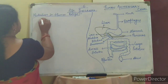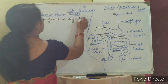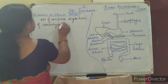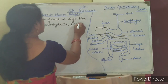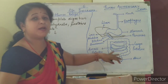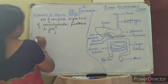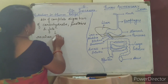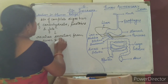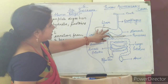The small intestine is the site of complete digestion — complete digestion of carbohydrates, proteins, and fats. Whatever digestion process happens, it is all completed here. The small intestine also receives secretions from the liver and pancreas.